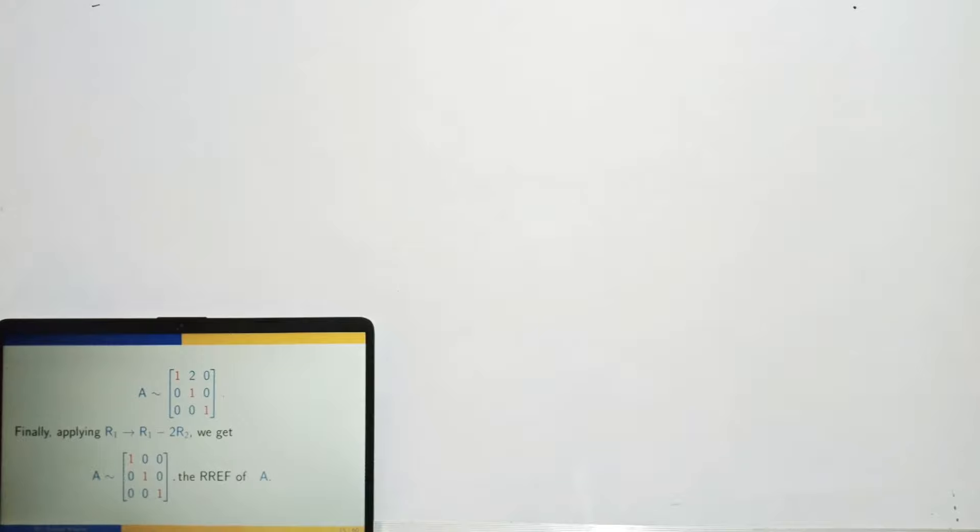To make zero at the position of 2 in the first row, use the second row — multiply the second row by −2 and add to the first. Applying this operation gives the RREF of the matrix. Tip: try to make 1 at the first position early to avoid fractions and reduce calculation errors.